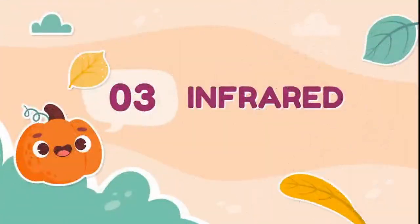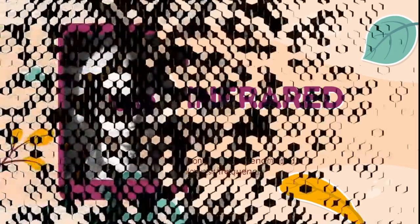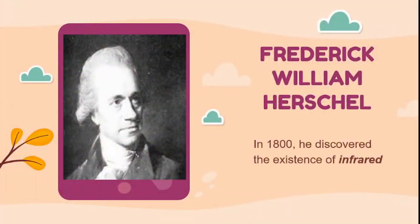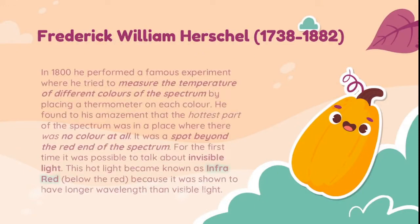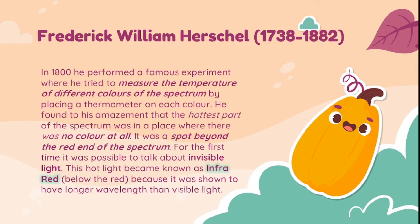Let's now have the infrared. It was discovered by Frederick William Herschel in 1800. He performed a famous experiment where he tried to measure the temperature of different colors of the spectrum by placing a thermometer on each color. He found, to his amazement, that the hottest part of the spectrum was in a place where there was no color at all — a spot beyond the red end of the spectrum. For the first time, it was possible to talk about invisible light, and this hot light became known as infrared.